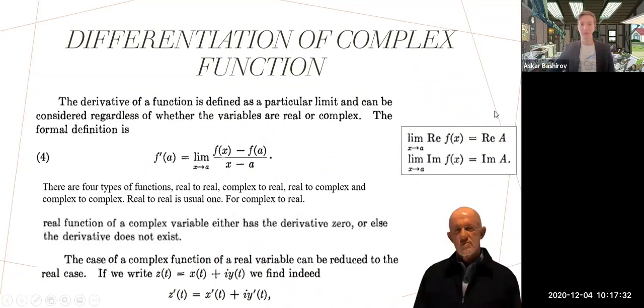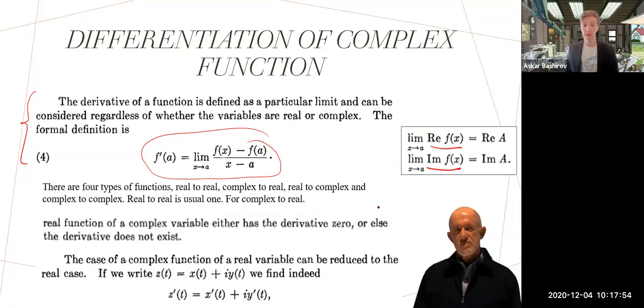Let's move on to differentiation of complex functions. The definition is almost the same. The only thing is the limit for a complex function exists if the limit of the real part exists and the limit of the imaginary part exists.